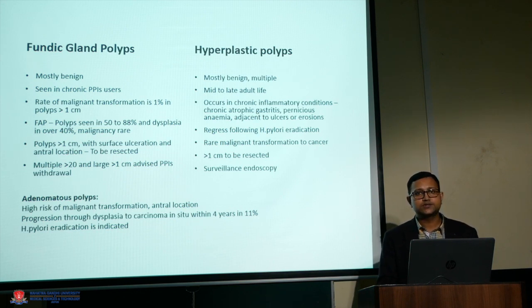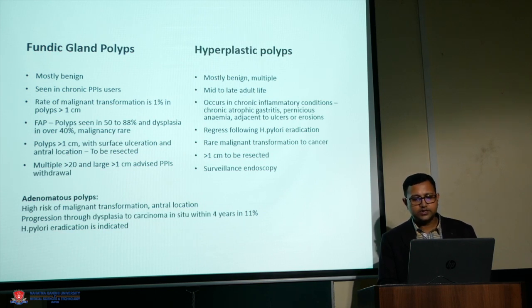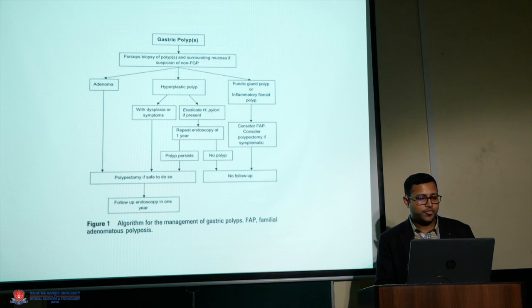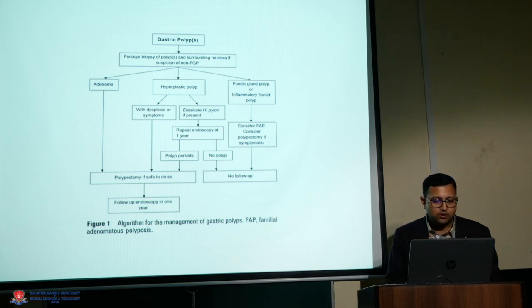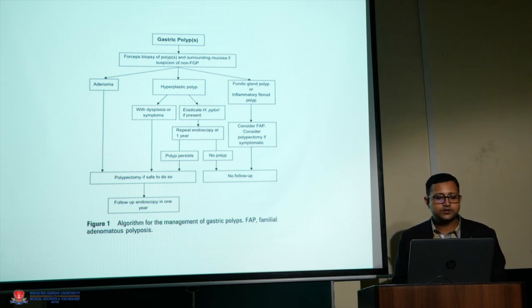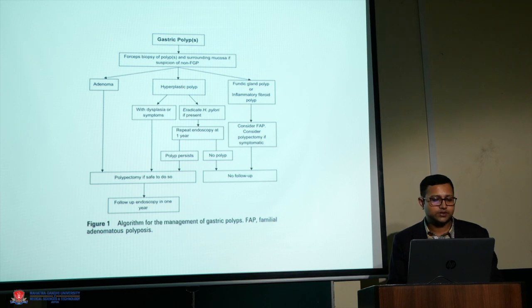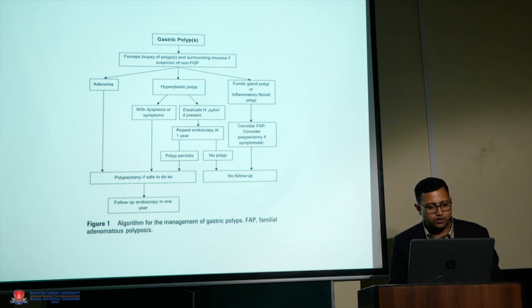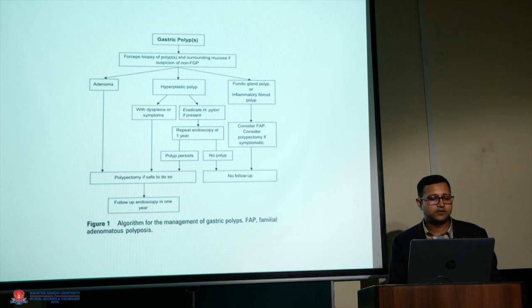Adenomatous polyps have the highest risk of malignant transformation. The chance of progression from dysplasia to carcinoma is around 11%. H. pylori eradication is indicated. This is an algorithm from the American Journal of Gastroenterology showing how to deal with gastric polyps. After taking a biopsy, we classify polyps into the three variants, proceed with H. pylori eradication, and perform surveillance endoscopy every year.